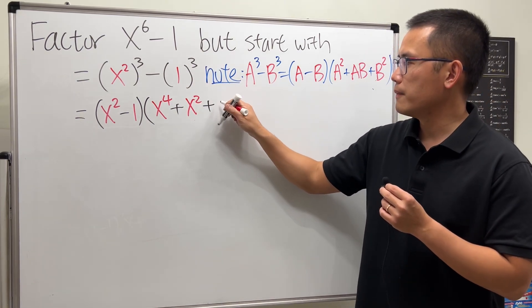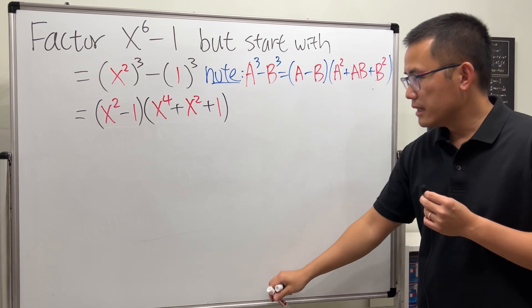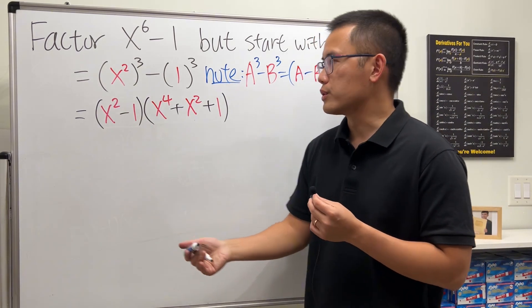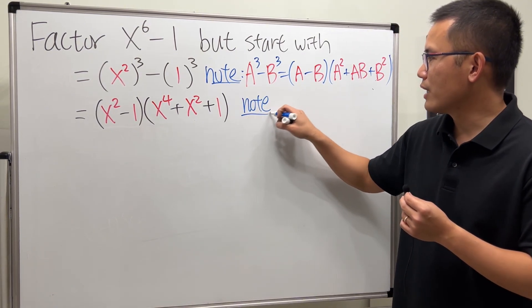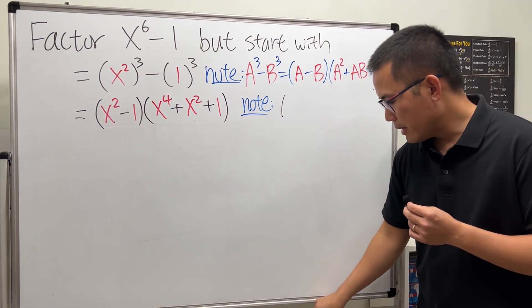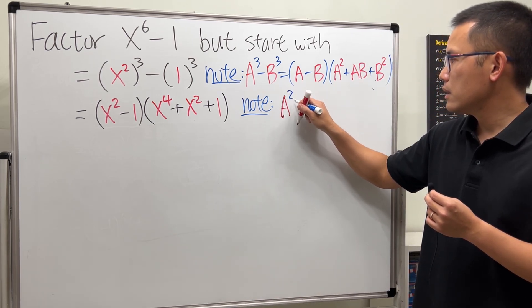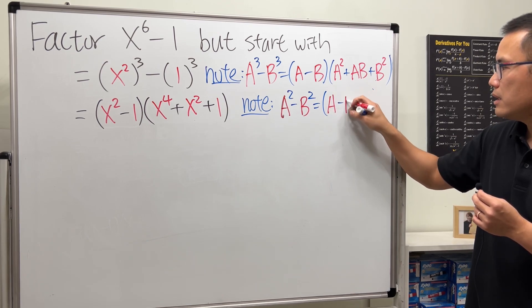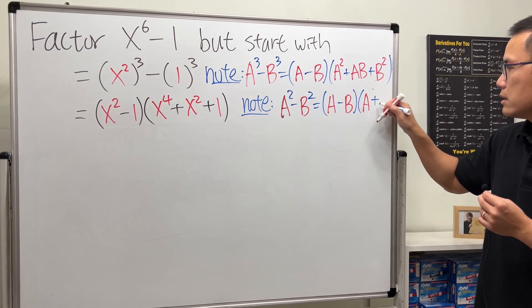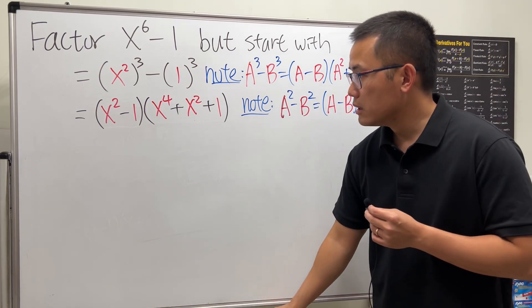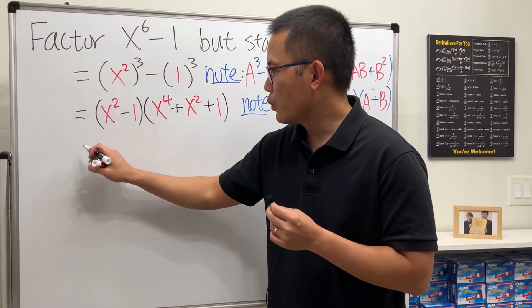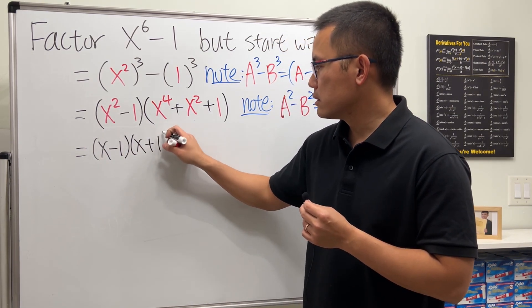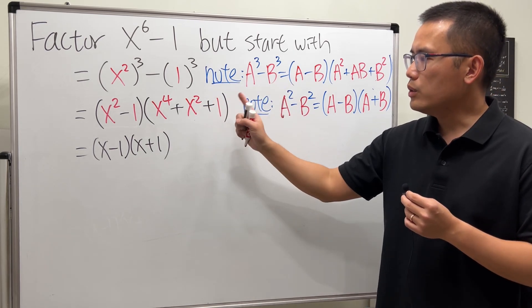Okay good. Next, here this is x² minus 1, difference of two squares, right? So let me write that down again for you guys: a² minus b² gives you (a - b) times (a + b). So for the first one we're just going to get (x - 1) times (x + 1). Now the question is, how do we factor that?